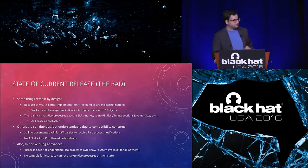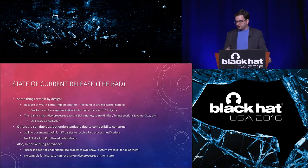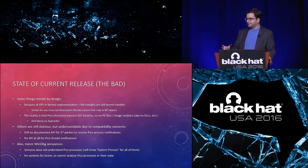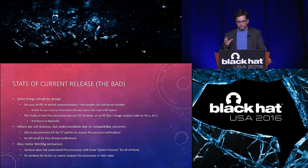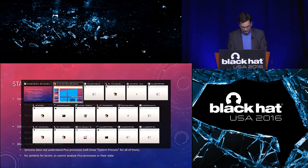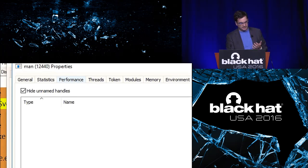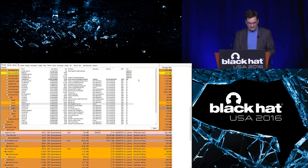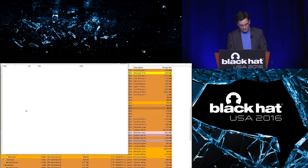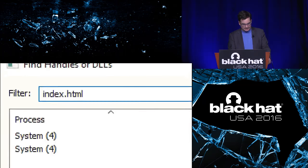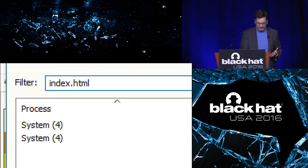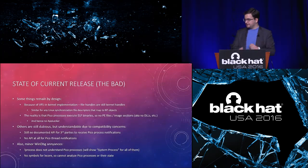Yet there are some things that remain by design. File handles are still going to be kernel handles. If you have a Linux process that opens a Windows file, you're not going to see that in the handle table of the actual process. If you look at the handle tables in Process Hacker of any Pico process, it's completely empty — but it's not really empty, it's accessing things as part of the kernel process. If you have tail with an index.html file opened, look who apparently has index.html opened — it's the system process, because it's actually a kernel handle, not a user-mode handle.